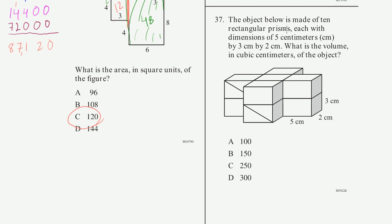Problem 37. The object below is made of 10 rectangular prisms, each with dimensions of 5 centimeters by 3 centimeters by 2 centimeters. What is the volume in cubic centimeters of the object? So it's this cross-looking thing.